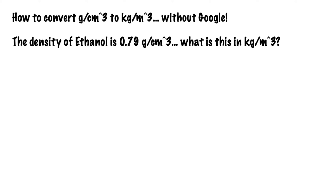In chemistry, you might be familiar with recording and working with densities in units of grams per cubic centimeter. In fact, you might remember that the density of water is one gram per cubic centimeter. But in physics, the standard unit for mass is the kilogram and the standard unit for length is the meter, so the standard unit for density is a kilogram per cubic meter.